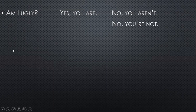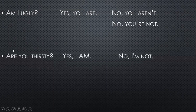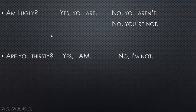Another example: Are you thirsty? Again, the form of the verb to be at the beginning, then the subject, and then the rest of the sentence — here we have an adjective. Are you thirsty? Yes, I am. Or no, I'm not.